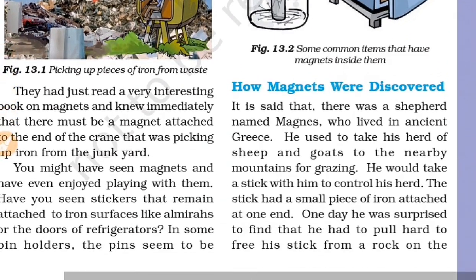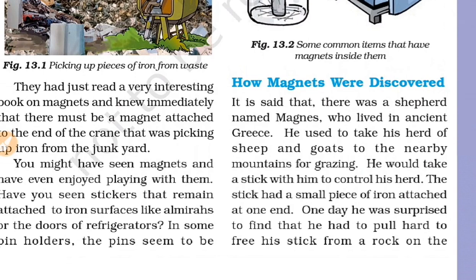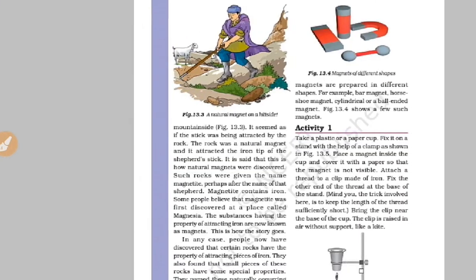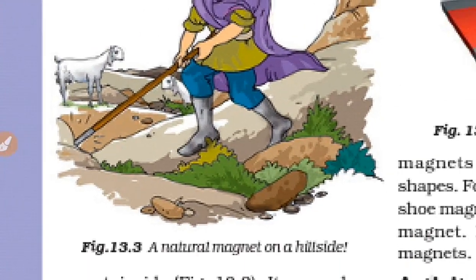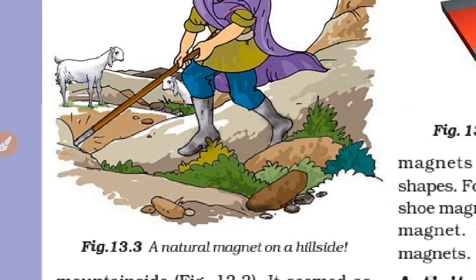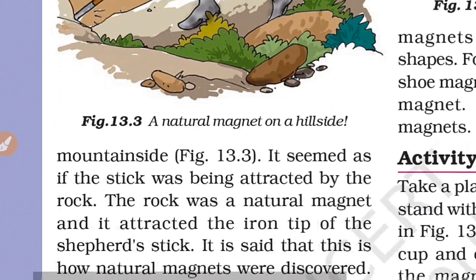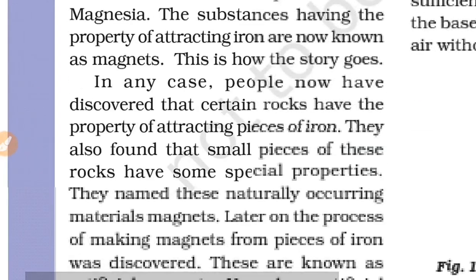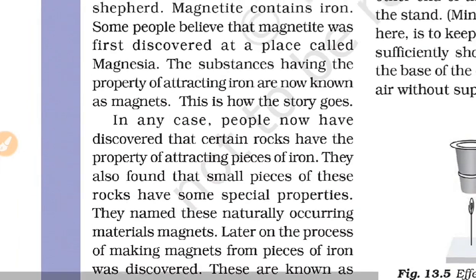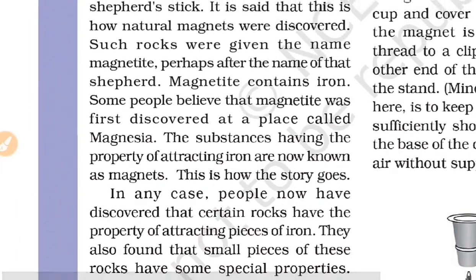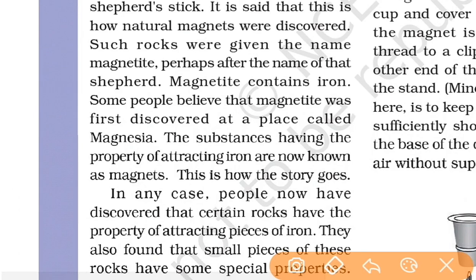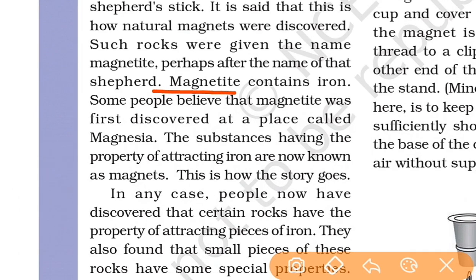How were magnets discovered? There are ions in the stick — it has a piece of iron. The stick can attract iron. So it acts as a magnet. The name of this naturally occurring magnet is called Magnetite. So iron makes the iron — that is Magnetite.